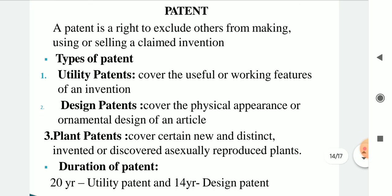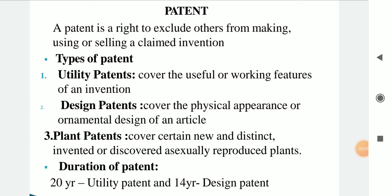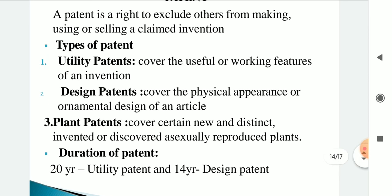The next IPR is Patent — an important one. A patent is the right to exclude others from making, using, or selling a claimed invention. The types of patent are: Utility patent, which covers the useful or working features of an invention; Design patent, which covers the physical appearance or ornamental design of an article; and Plant patent, which covers certain new and distinct invented or discovered asexually reproduced plants. The duration of a patent is 20 years for utility patents and 14 years for design patents.